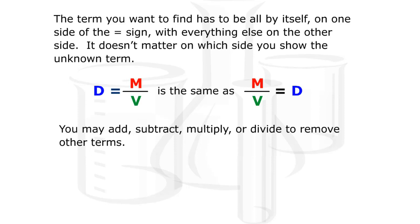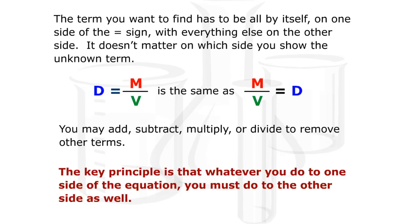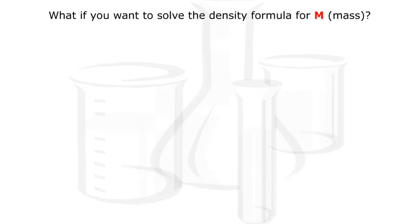Density equals mass divided by volume is the same as mass divided by volume equals density. You may add, subtract, multiply, or divide to remove other terms. The key principle is that whatever you do to one side of the equation, you must do to the other side as well.